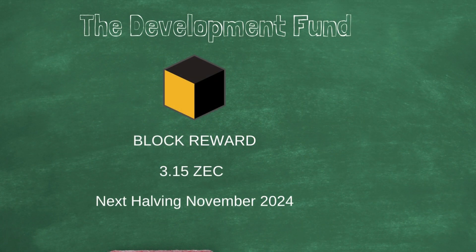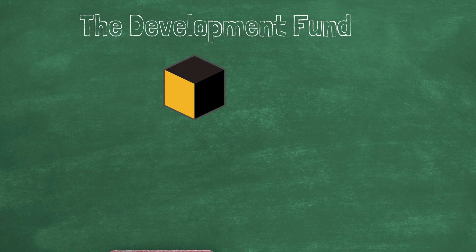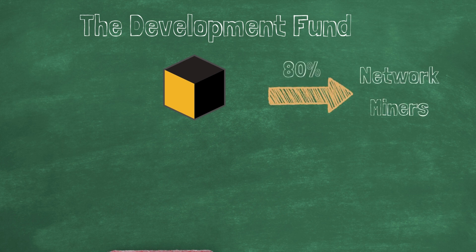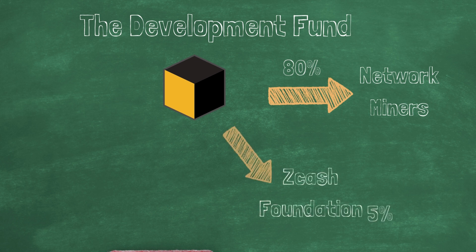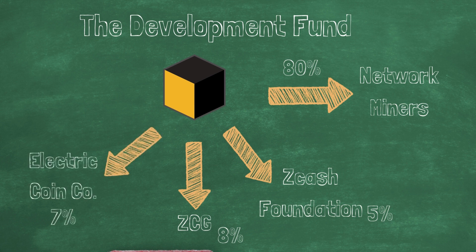Currently, the Zcash block reward is 3.125 ZEC, due for halving in November of 2024. Out of each block, the Zcash protocol distributes 80% of the reward to network miners. The Zcash Foundation receives 5%, the Zcash Community Grants Programme receives the largest share with 8%, and the ECC receives 7%.